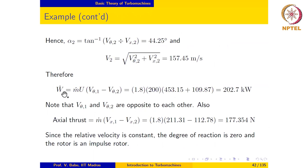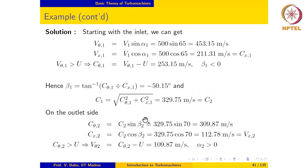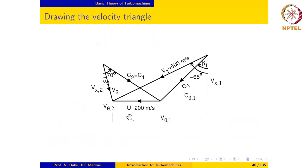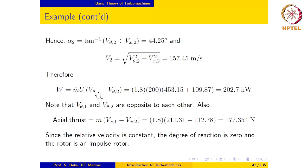The power produced by the rotor is given by the Euler turbine equation as m-dot times u times (v_theta1 minus v_theta2). Notice that v_theta2 is in the opposite direction to v_theta1, so both contribute to the torque in the same sense — meaning they must be added together, not subtracted. This gives a power of 202.7 kilowatts. This reflects the earlier discussion that the negative sign in the Euler turbomachinery equation must be used with care.